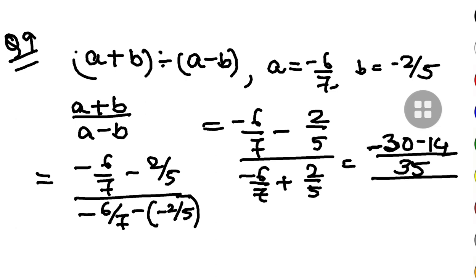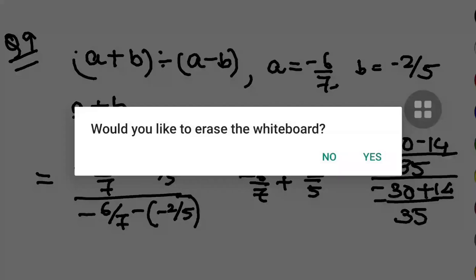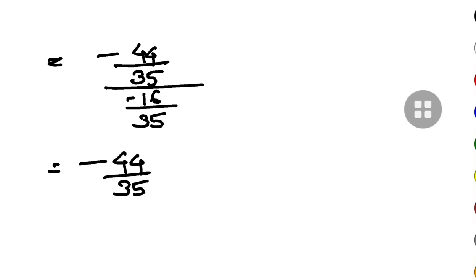In the denominator also, this will be negative. LCM is 35 minus 30. This time it will be plus 14. Now if I simplify it further, this will be minus 44 by 35 divided by minus 16 by 35. This will be further minus 44 by 35 into minus 35 by 16 if I take the reciprocal.